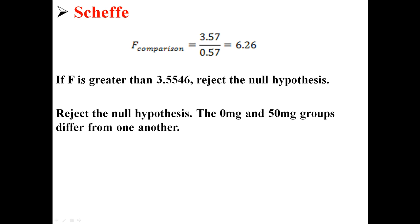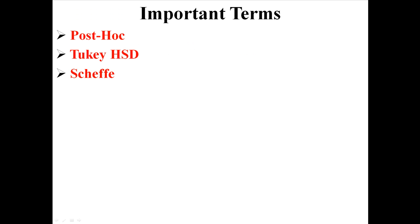Now using this, try to do this on your own. Try to compare 0 and 100, and try to compare 50 and 100. Those are two more comparisons that you could do using the Scheffe test. And those are two different post-hoc tests that are usually done after a one-way ANOVA.